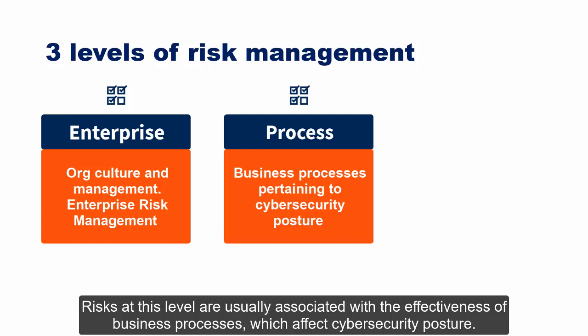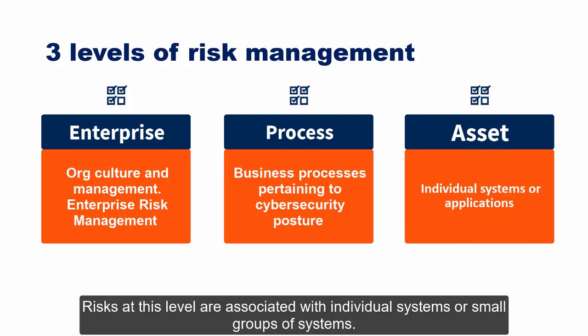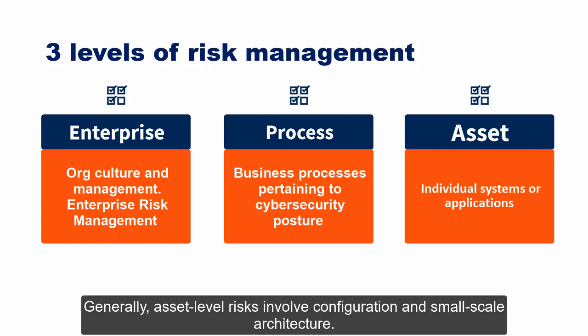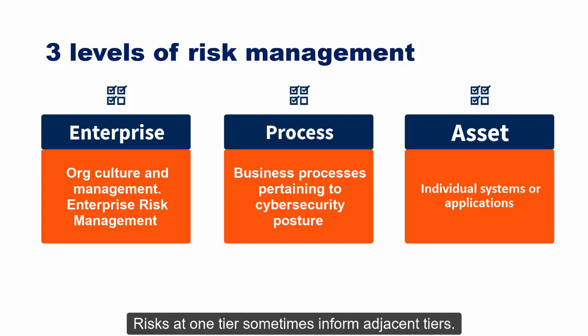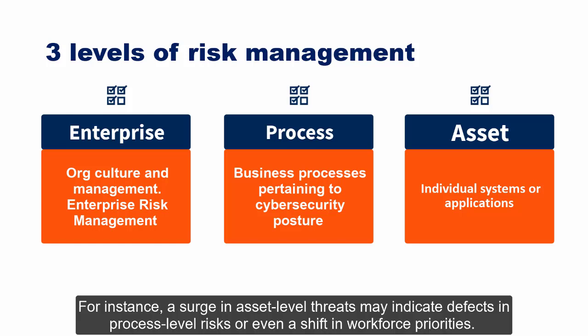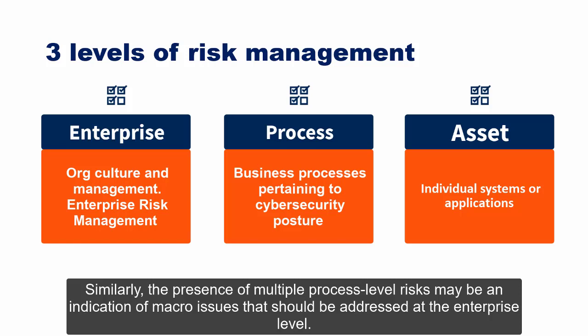At the process level, risks are usually associated with the effectiveness of business processes affecting cybersecurity posture. Issues typically involve security policies, standards, process design, workflow, and workload. At the asset level, risks are associated with individual systems or small groups of systems — generally involving configuration and small-scale architecture, focused on technical vulnerabilities, with tactical remediation. Risks at one tier sometimes inform adjacent tiers.